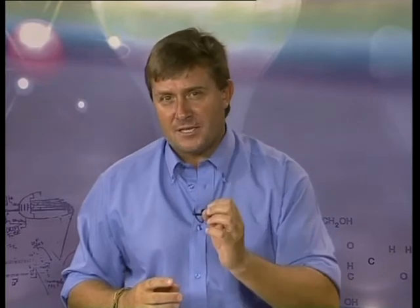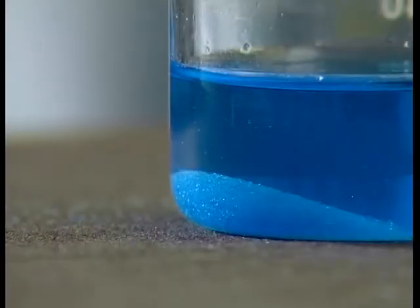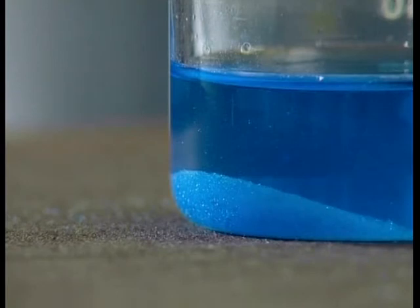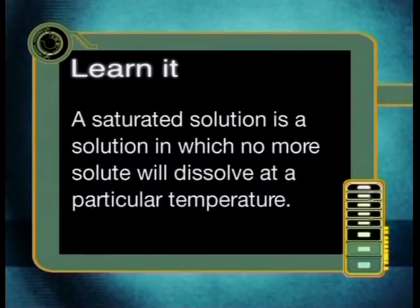If this is true, then there must be a point at which no more solute can dissolve into the solvent at that particular temperature. Here is the beaker which contained 25 milliliters of water at the beginning of the experiment. We have added 12 grams of solute to it. The last sample of solute just does not want to dissolve at this temperature. This means that this is now a saturated solution. A saturated solution is a solution in which no more solute will dissolve at the present temperature of the solution.